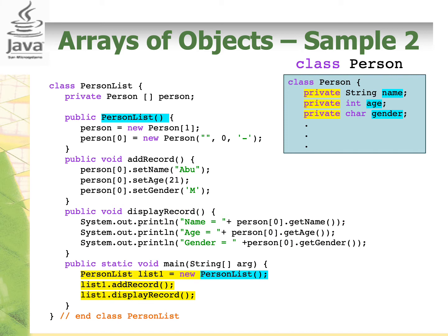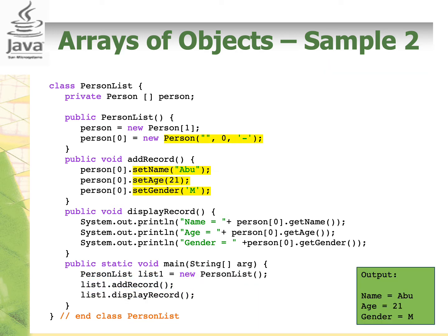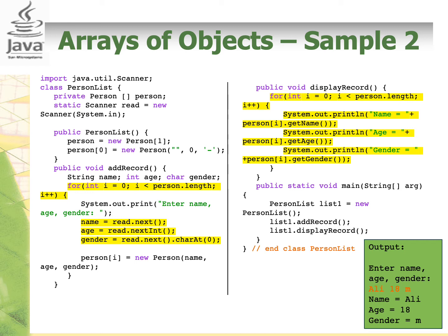In the main method, we create an object of PersonList class called list1 and it calls the constructor. As mentioned, in the PersonList constructor, an object of the personArray is created and it invokes the Person class constructor. In the main method, addRecord and displayRecord methods are invoked. When we run this code, the output we get is name equal to abu, age equal to 21, gender equal to m. This is because we have reassigned the values using setters, even though at the beginning when we created the Person object, we called the constructor and passed in an empty string, 0, and a dash. Similarly, we can use a for loop to prompt the user for input for name, age, and gender, and then use a for loop again to display the output.